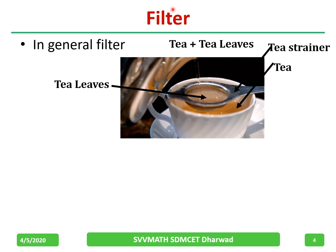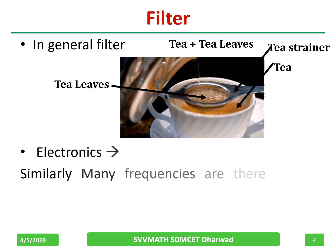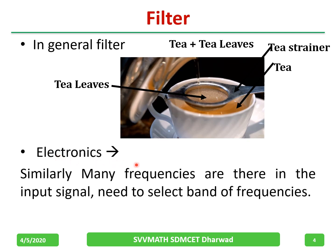So what is a filter? To understand the filter, let us take a general example. Everybody might have observed this figure — a picture tells a thousand words. I have a tea strainer and I want to remove tea leaves, so I use this tea strainer. Whatever I want, only tea will be available to me. Similarly, in electronics, I have many, many frequencies and I want to select only a few. To do that, we use electronic filters.